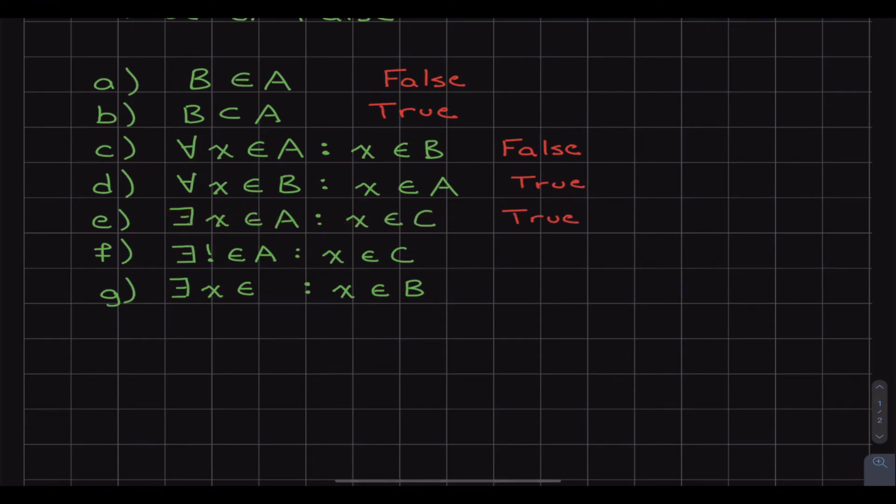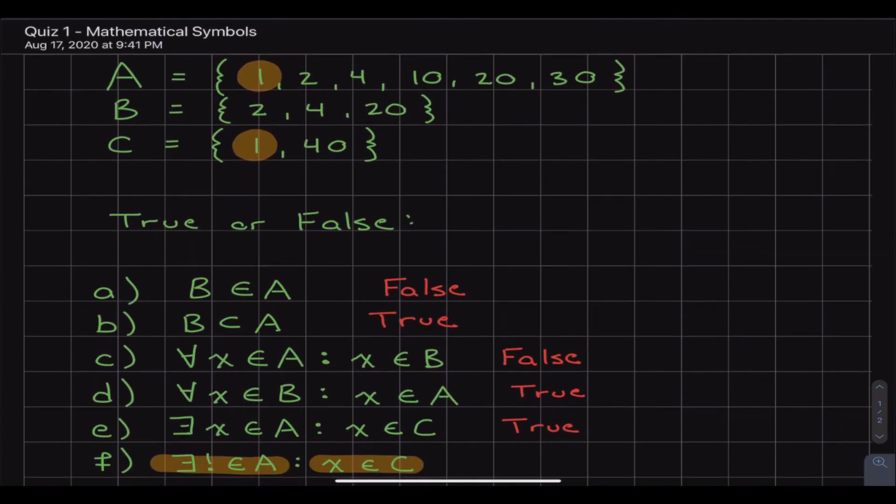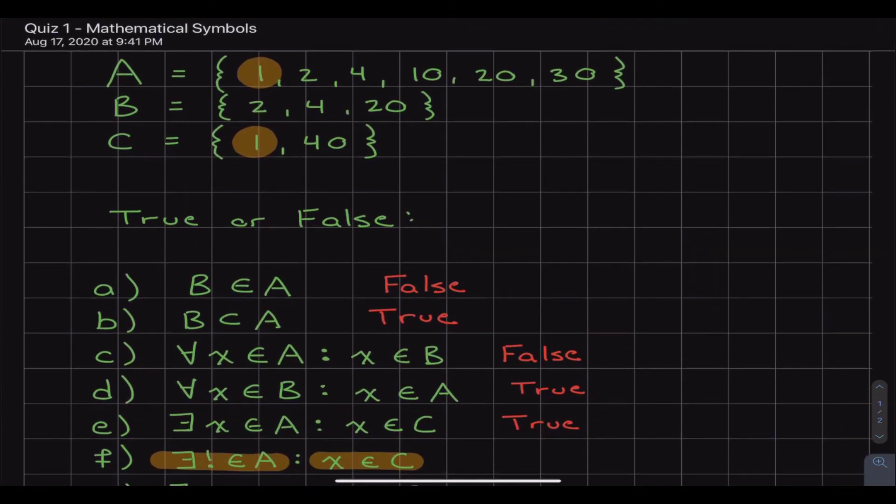And if we look down to the next question, number f, it's the exact same thing. And the only difference is this little exclamation point right there. And what that means is that there exists an element and it's unique. So what this is reading, if we just go left, right, is there exists a unique element in A that also exists in C. And I kept them highlighted because yes, this is basically the exact same as the last question.